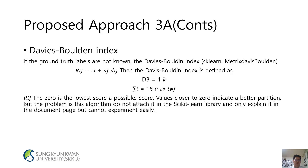Profile of Project 3A continued: Davies-Bouldin index. If the ground-truth labels are not known, the Davies-Bouldin index is a second matrix. In Rij, Si, Sj, Dij, the Davies-Bouldin index is defined as db = (1/k) * Σ(i=1 to k) max(i≠j) Rij. The zero is the lowest score possible; a score value closer to zero indicates a better partition. However, this algorithm is not attached in the scikit-learn library and is only explained in the documentation but cannot be explained easily.